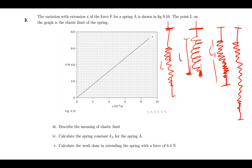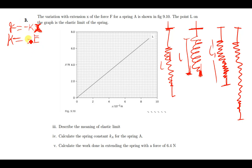The second question asks us to calculate the spring constant K for spring A. This is straightforward. If you don't have other data, you can calculate the spring constant using Hooke's law: F equals negative Kx. Making K the subject gives K equals negative F over x.